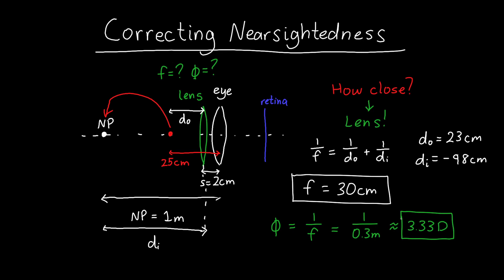And so if I were choosing the closest standard lens, that might be about 3.25 diopters.